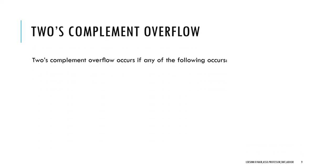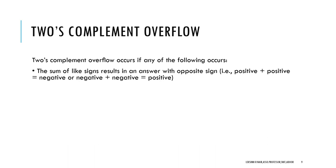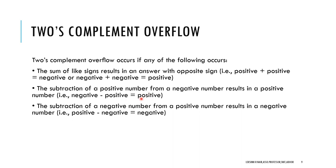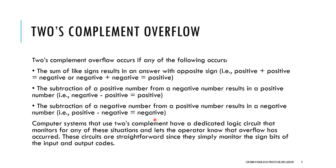2's Complement overflow occurs under the following conditions: when two positive numbers are added and the result is negative, or when two negative numbers are added and the result is positive. If unlike-sign numbers are added, overflow cannot occur. In a computer system, the hardware checks for all these conditions. When any of these conditions are met, it means there is an error in the result and an overflow has been detected.